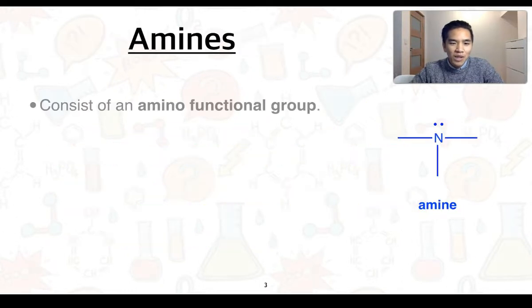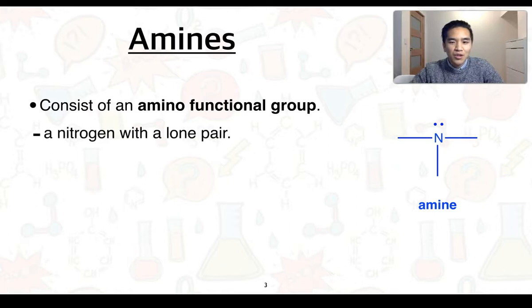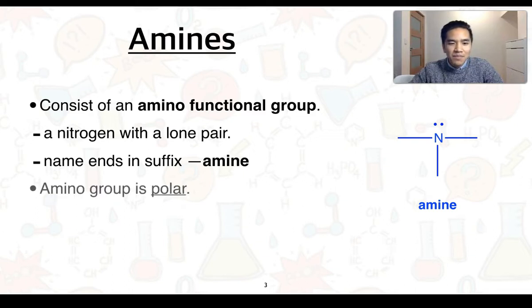Amines consist of what we call the amino functional group. This essentially is a nitrogen with a lone pair. The name ends in the suffix amine, and we say that the amino group is polar.